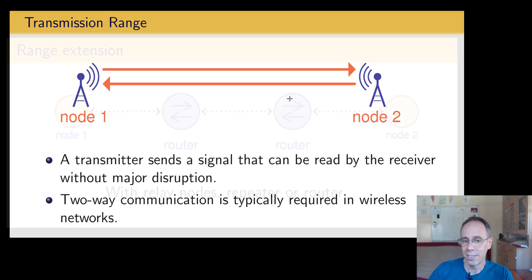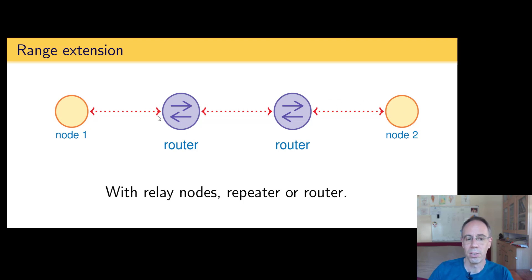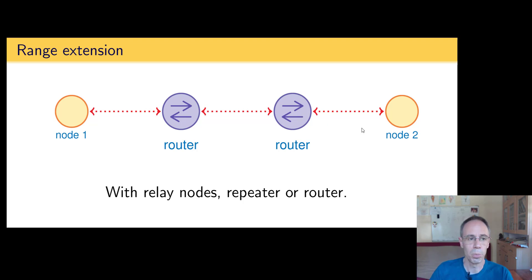You can extend the range in a mesh network where you have routers, relay nodes, or repeaters. Then we can extend the range of the network. When the range between two direct nodes is for example 50 meters, then with two routers we can have a range of three times 50 meters, so 150 meters in one direction. If you want to build a network, you always have to keep in mind how you arrange your modules.